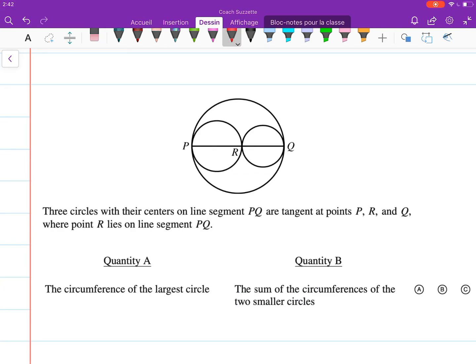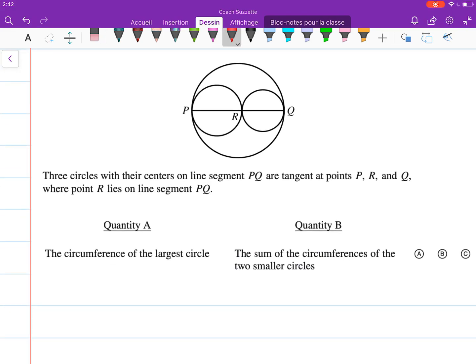Let's label which circles are which. The largest circle is L. For the two smaller circles, let's say we have a medium circle M and a small circle S.